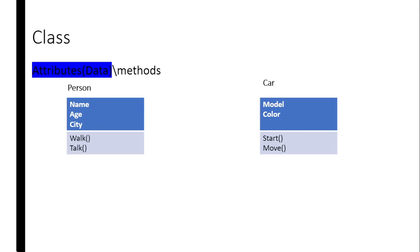An application can have more than one class. For example, in a simple login application, you can have different classes performing various functions — such as getting user data, processing the data, or defining user data.